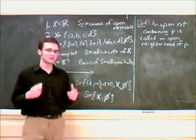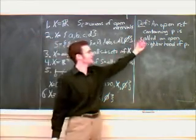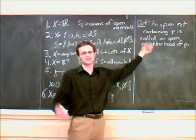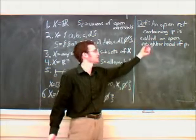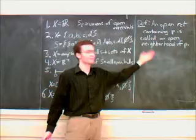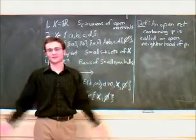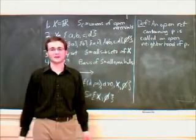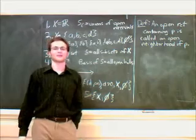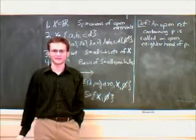The definition of an open neighborhood is this: an open set containing P, where P is just some point in our set X, is called an open neighborhood of P. That's pretty straightforward, not much really to explain there, but let's go through some examples to make sure we have a good idea.